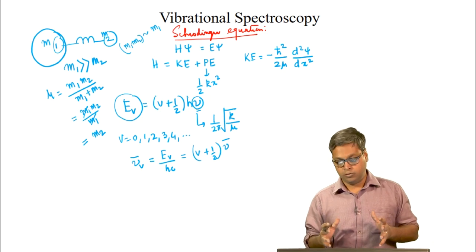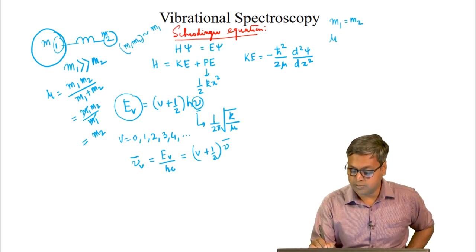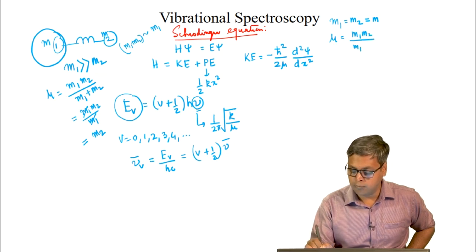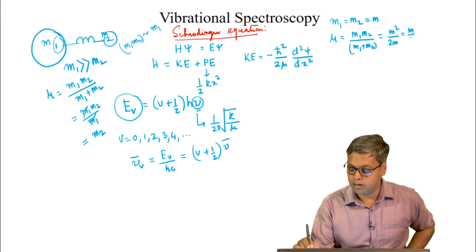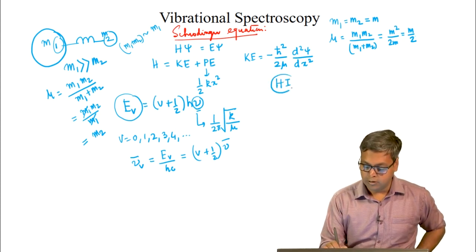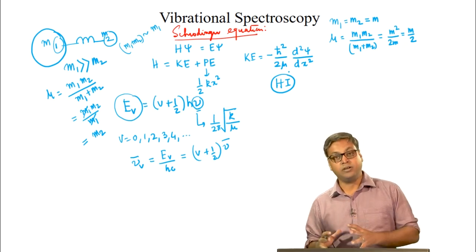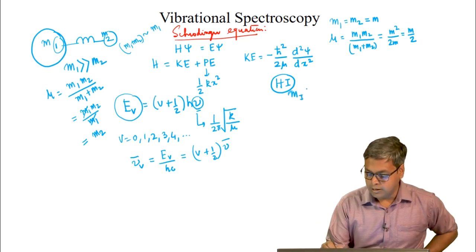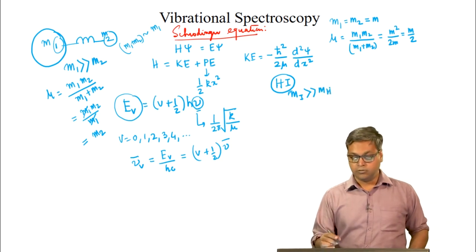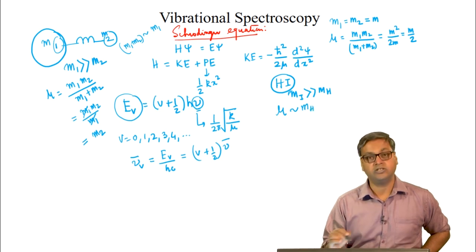For a homonuclear molecule where m1 = m2 = m, the reduced mass is m·m / (m + m) = m/2. For a heteronuclear molecule like HI, the atomic weight of iodine is much larger than hydrogen, so m_I >> m_H. In that case, the reduced mass mu is approximately equal to m_H.